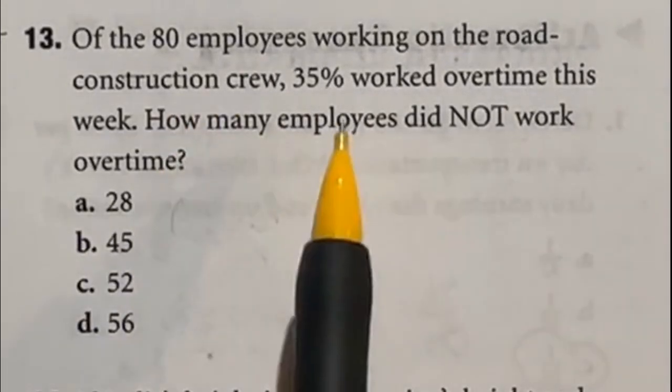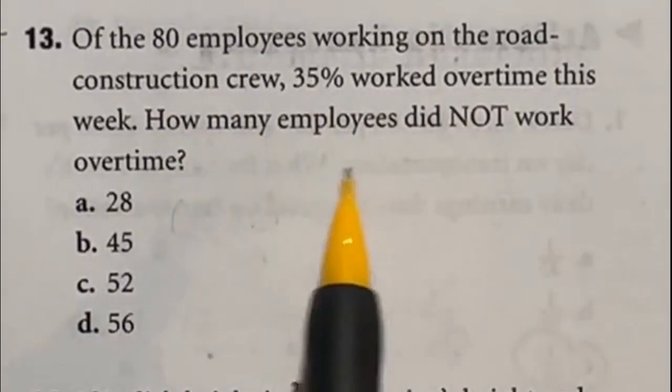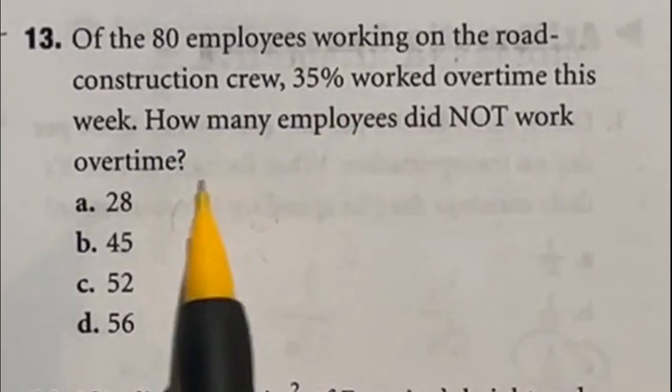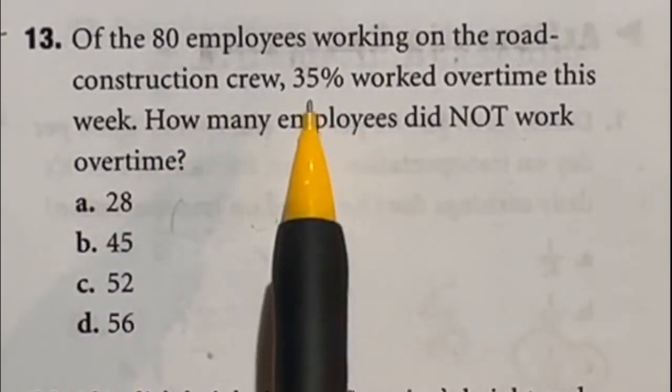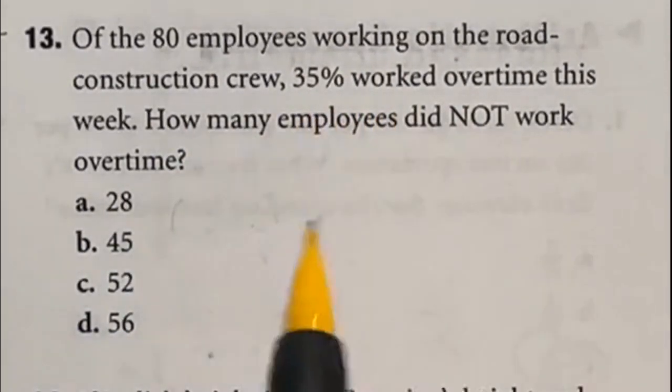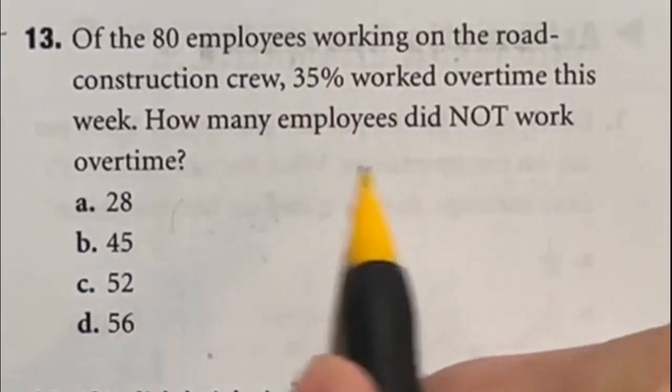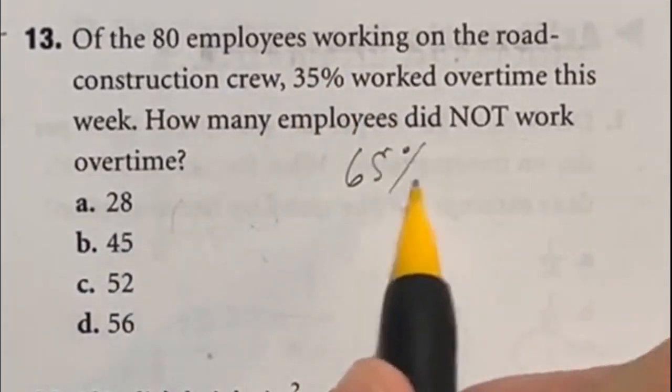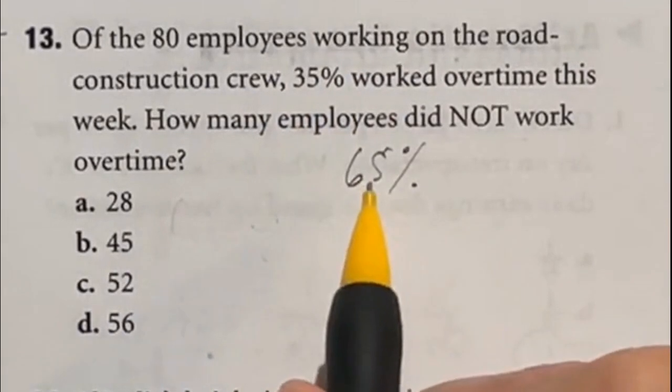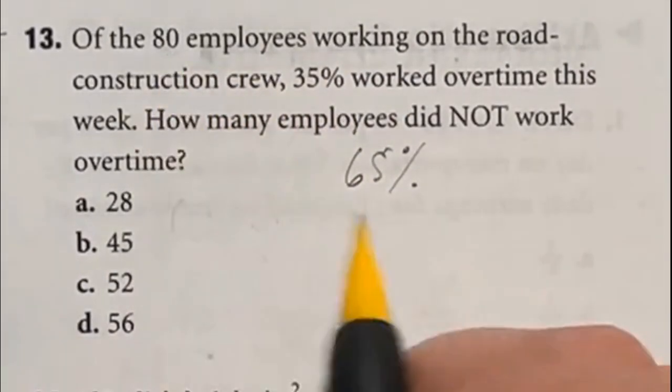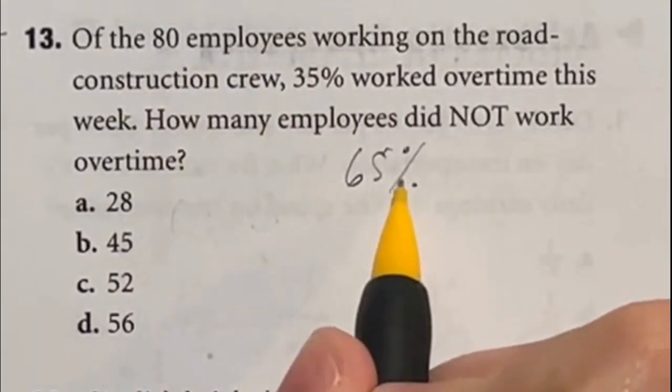So there are 80 employees. 35 percent work overtime. The rest don't. They want to know how many employees do not work overtime. First off if out of 100 percent 35 percent worked overtime then 100 minus 35 tells me that 65 percent did not work overtime.